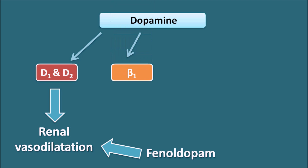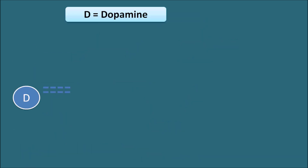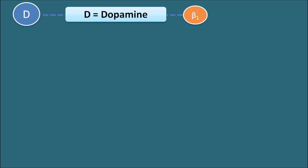At high doses, dopamine can act on alpha-1 receptors, further increasing systolic blood pressure. So dopamine can act on dopamine receptors, beta-1 receptors, and alpha-1 receptors in a dose-dependent manner: at low doses it acts on dopamine receptors, reducing blood pressure particularly at renal blood vessels; at intermediate doses it mainly acts through beta-1 receptors increasing systolic blood pressure; and at very high doses it activates alpha-1 receptors, further increasing systolic blood pressure.